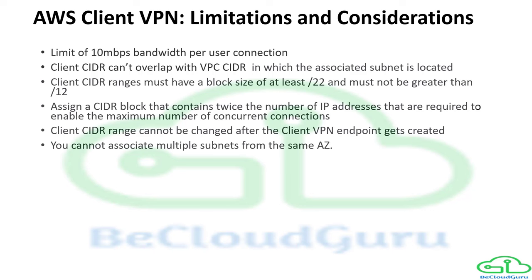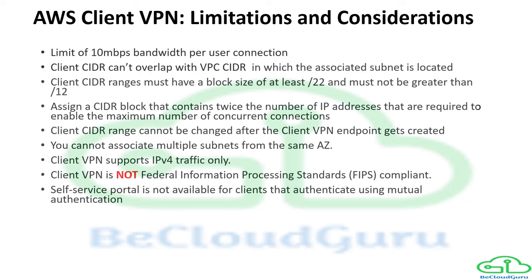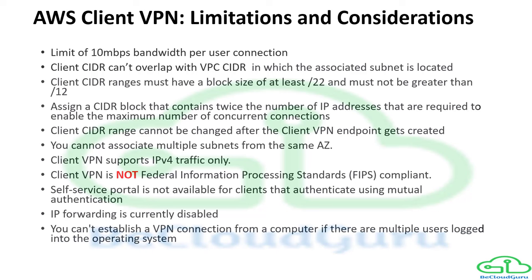The client CIDR range cannot be changed after the Client VPN endpoint is created — plan accordingly. You cannot associate multiple subnets from the same availability zone; multiple subnets must belong to different AZs. Client VPN only supports IPv4 traffic at this time — no IPv6 support, though there is a workaround to prevent IPv6 leaks documented by AWS. AWS Client VPN is not FIPS compliant.